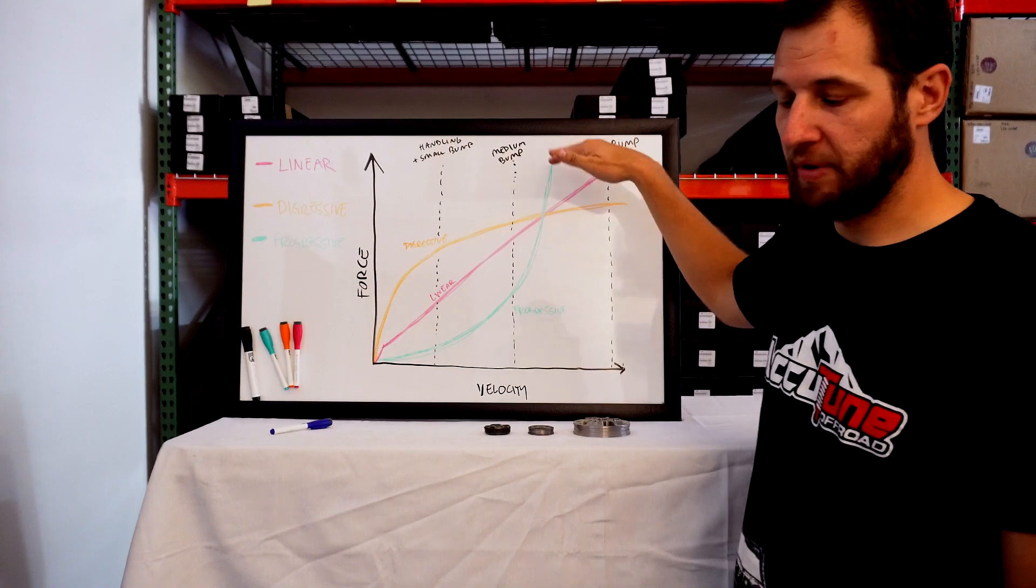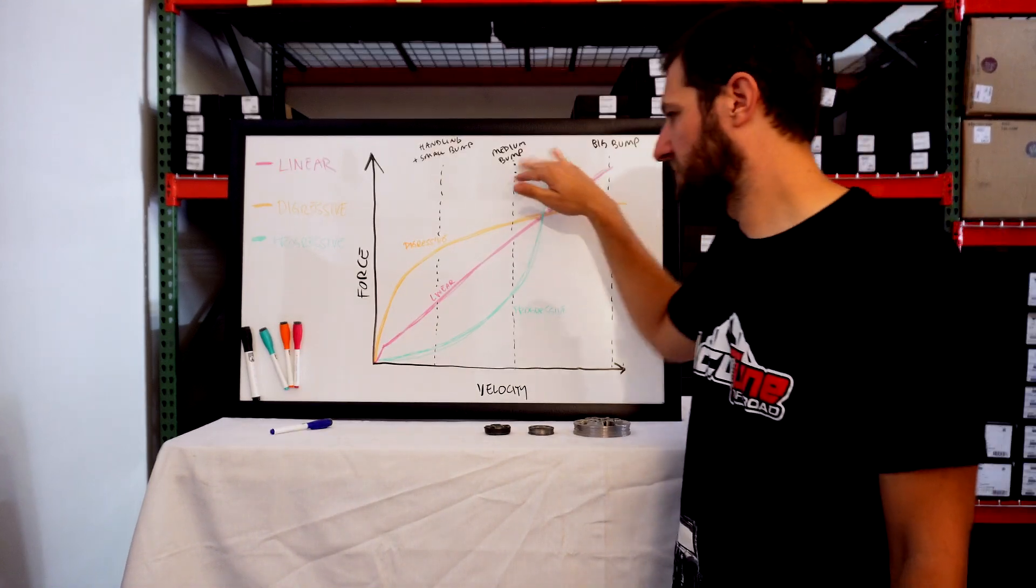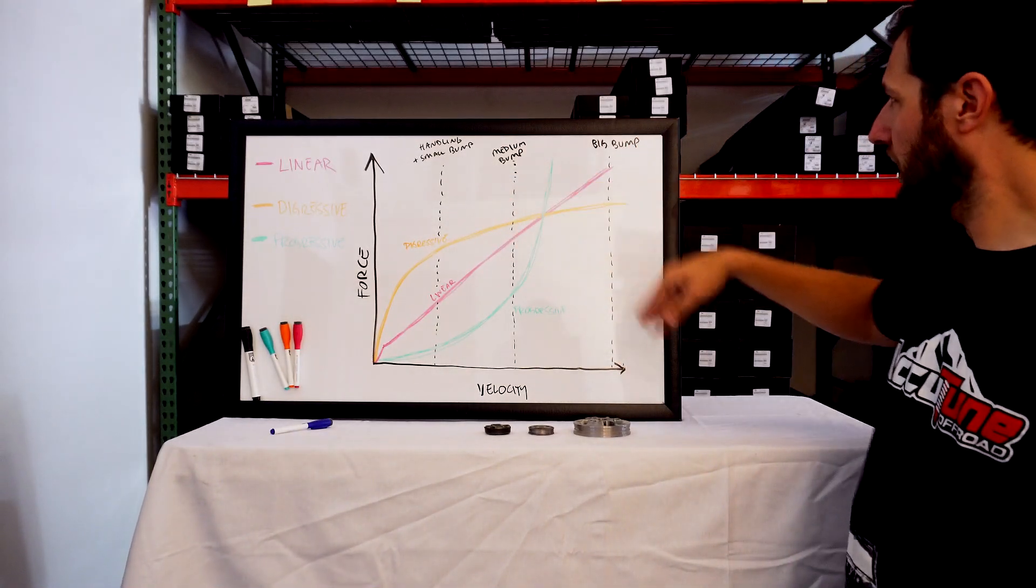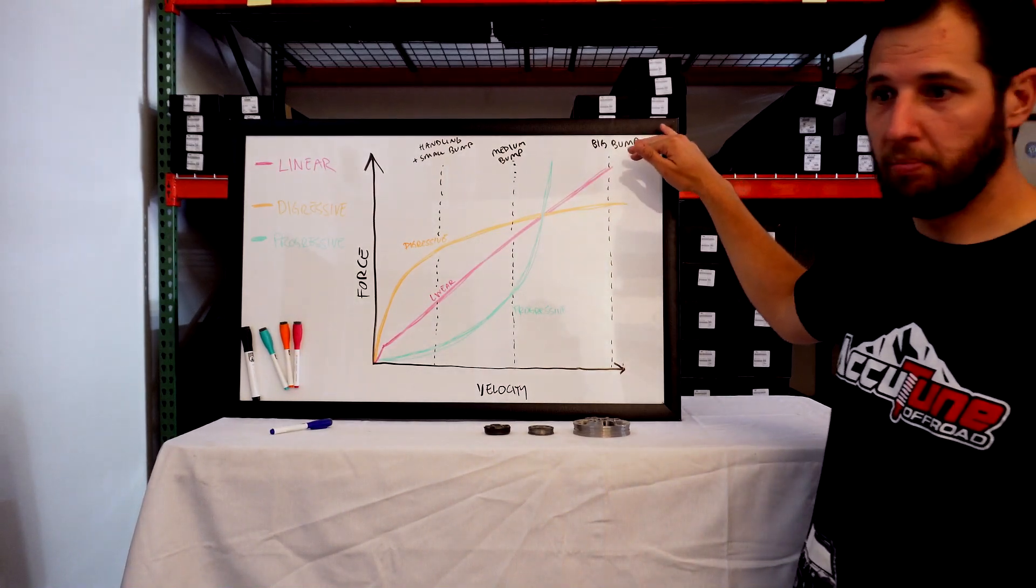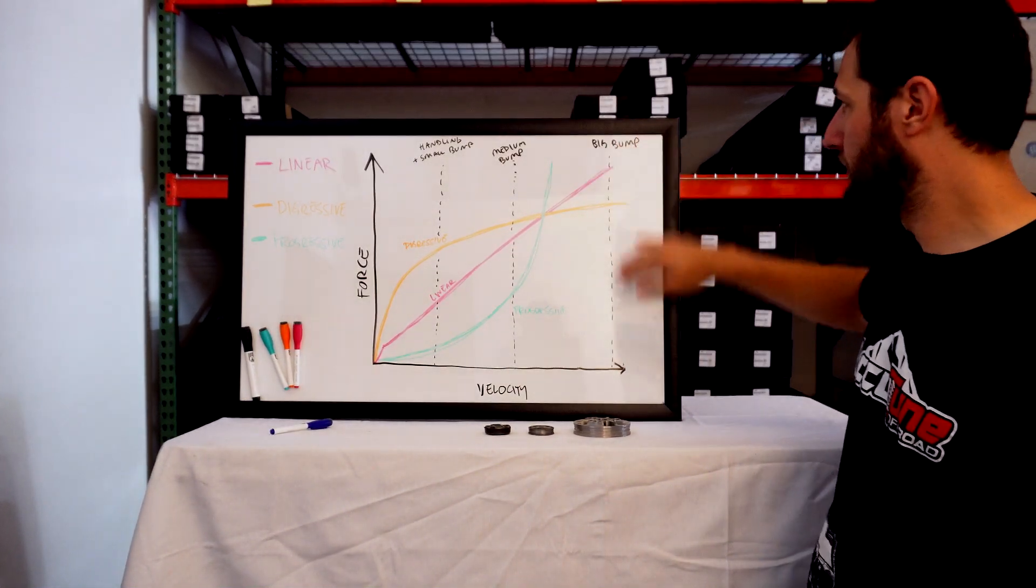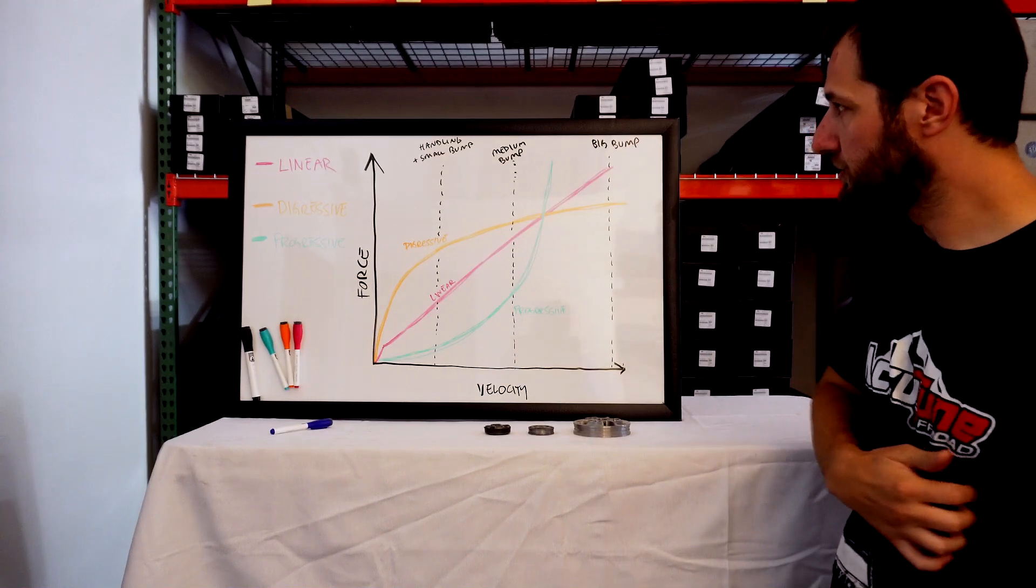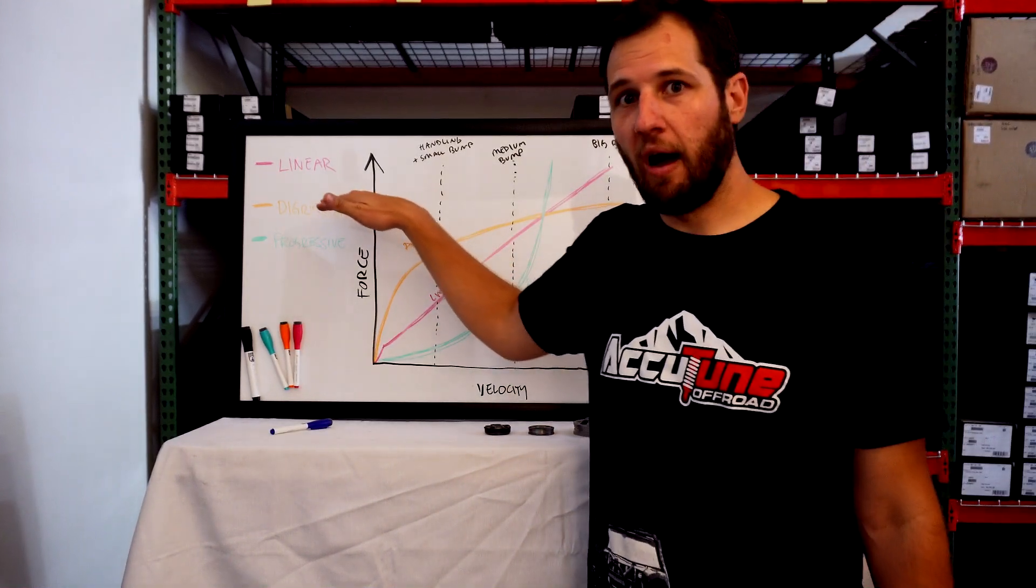Finally, over here we have a large bump. That would be like a square edge bump or hitting the whoops or something like that. The three main types of valving that you're going to see in off-road shocks are linear, which is a straight line here.